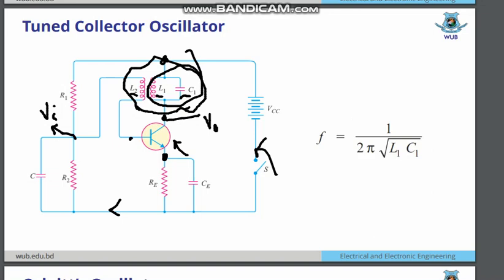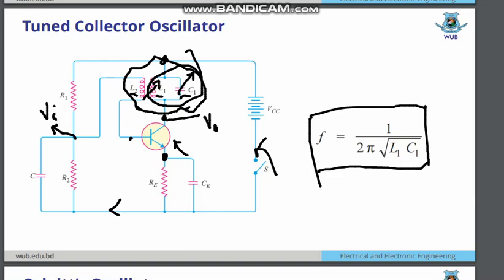It creates the oscillations and also it is dependent on a certain frequency. If you make it variable — if you make L1 or C1 variable, you can use a varicap here — then it will be a variable frequency generator or variable frequency oscillator. That can be governed by the resonance frequency equation: F equals 1 by 2π times root over L1 C1.